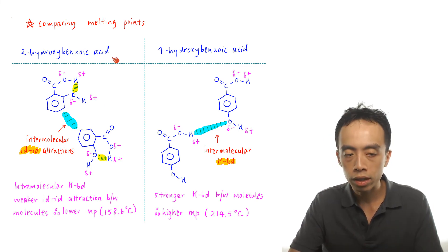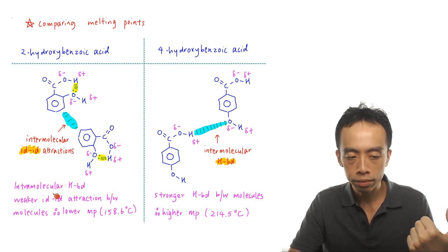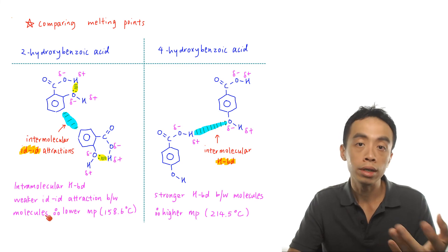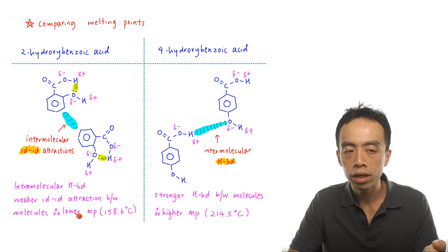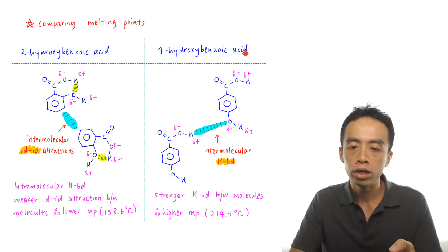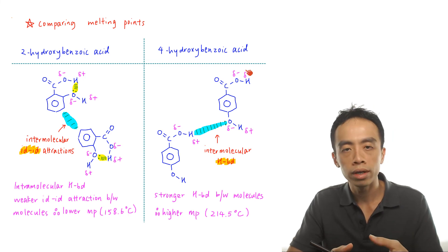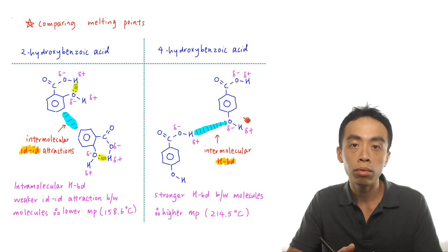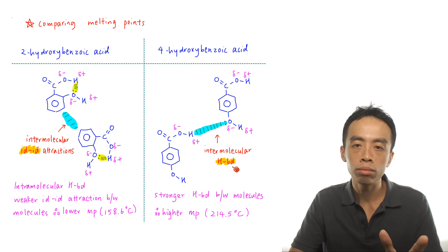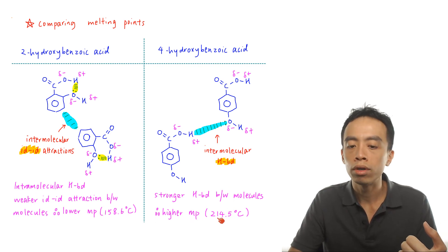Comparing the two: 2-hydroxybenzoic acid forms intramolecular hydrogen bonds because the OH group and the acid group are very close, so the hydrogen bonding is used up within the molecule, and between molecules it must use weaker IDID attraction. For 4-hydroxybenzoic acid, because the hydroxy group and the acid group are pointing directly opposite each other, there is no intramolecular hydrogen bond. Without intramolecular hydrogen bonding, hydrogen bonding can be used between molecules, making the intermolecular forces stronger. Therefore, the melting point of 4-hydroxybenzoic acid is higher: 214.5°C.